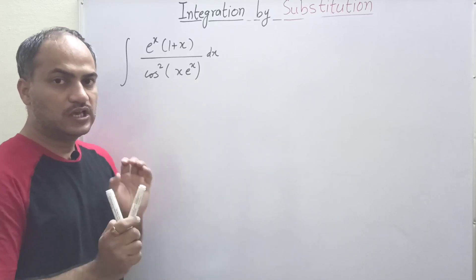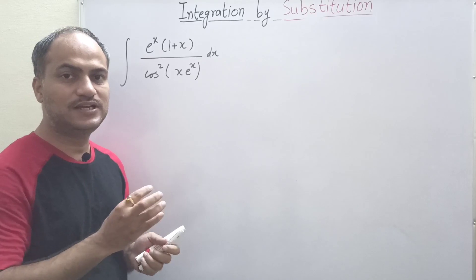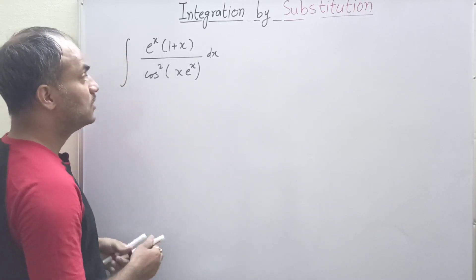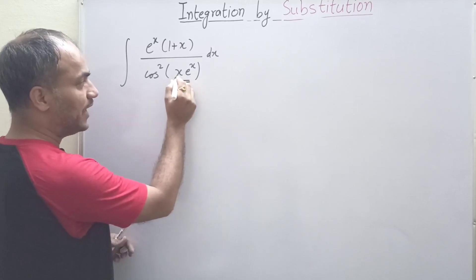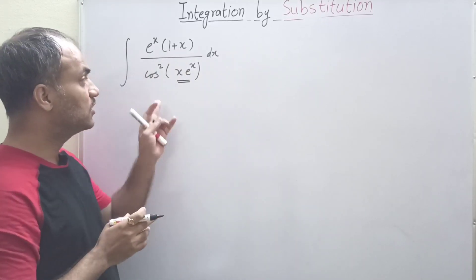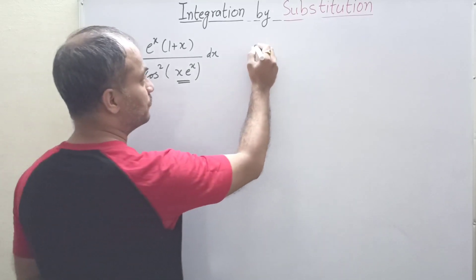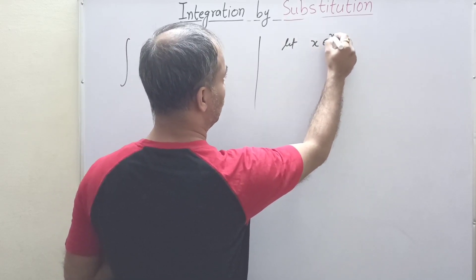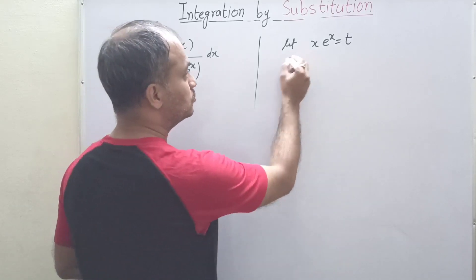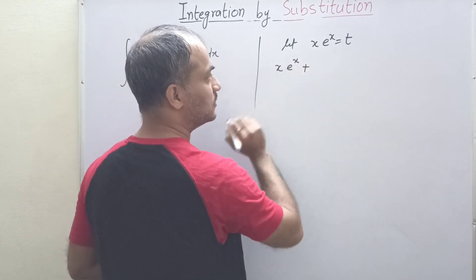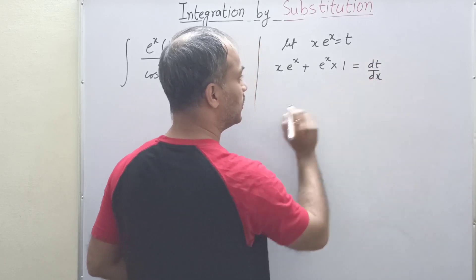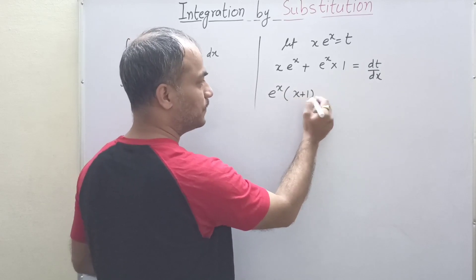For the next question, what to substitute basically depends on our ability at differentiation — if you know differentiation well, you can find the right term more quickly. We observe that when we differentiate x·e^x, we get a specific term already visible in the integral. So let t = x·e^x. Differentiating by the product rule: first function times derivative of second plus second times derivative of first, giving dt/dx = e^x + x·e^x = e^x(1 + x).